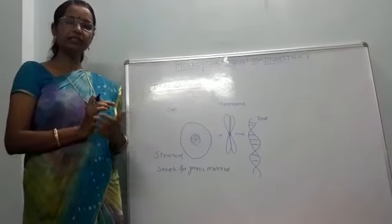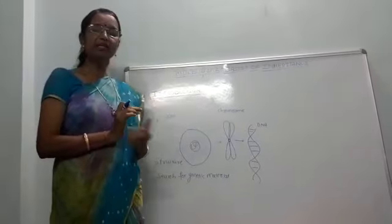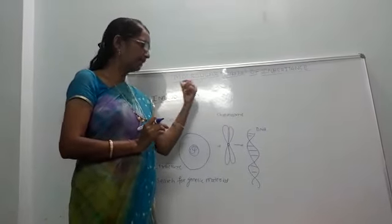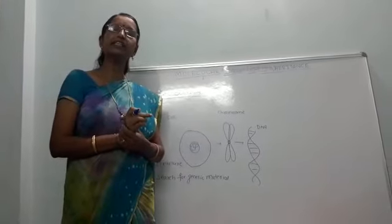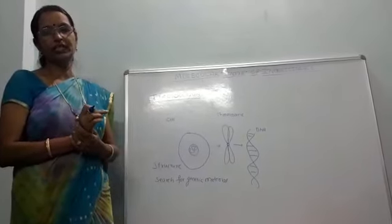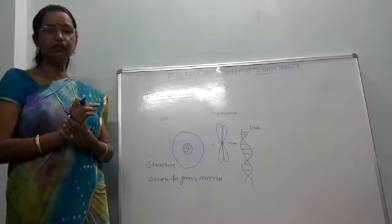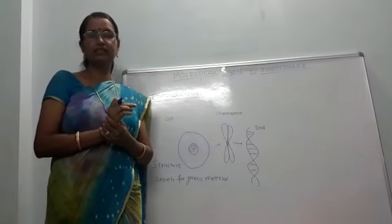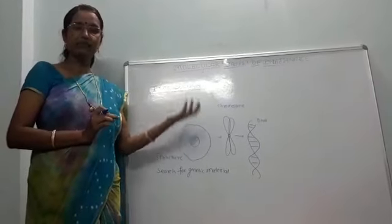In the previous lesson we learned about genetics, and within that, Mendelism. We learned that characters are inherited through factors. Mendel, who was the father of genetics, explained that characters are inherited through factors. Today we call those factors genes, but Mendel called them factors — and they are responsible for the transmission of characters from parents to offspring.